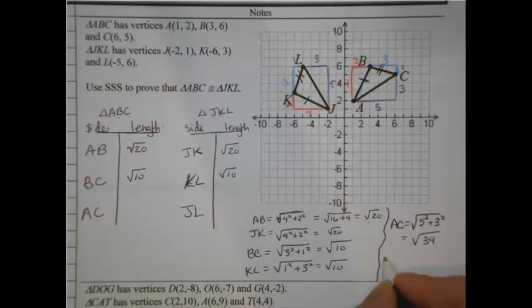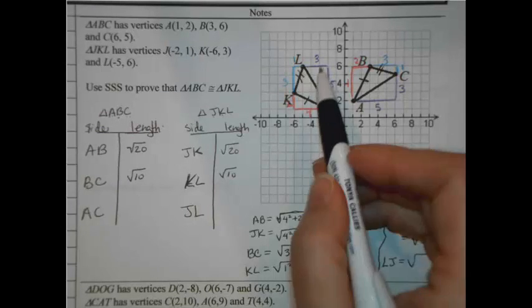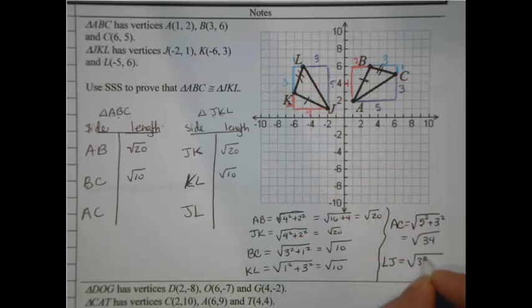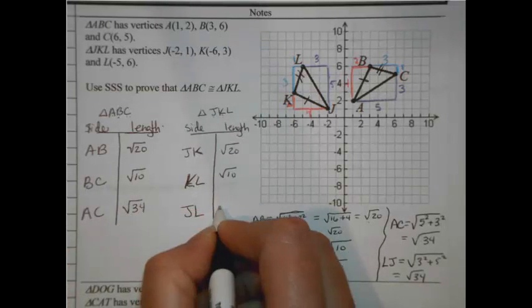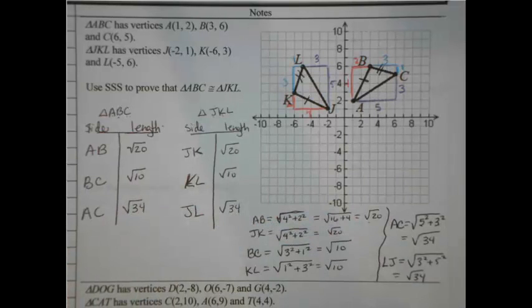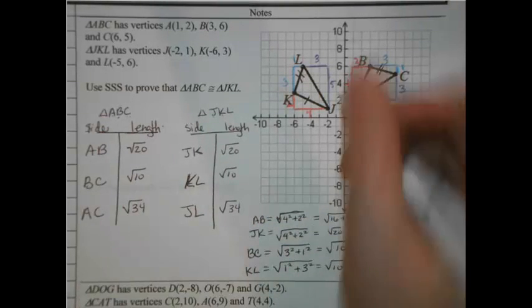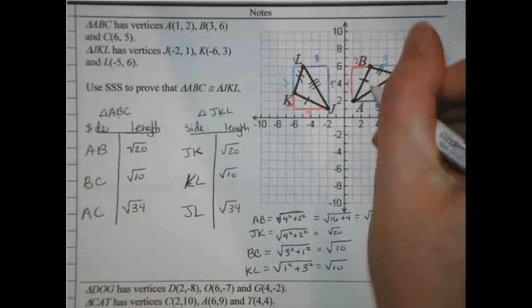And then doing the L to J part, that's going to be 3 squared and 5 squared. So same thing, just a different order. It's going to give me the same answer. Alright, so AC is radical 34, JL is radical 34. Alright, so we have shown that our sides are congruent. In fact, let's add that last tick mark. Our sides are congruent.